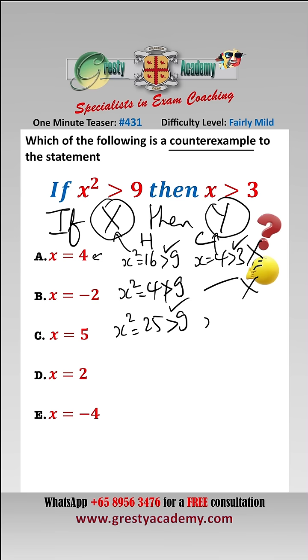x equals 5: well, x squared equals 25, which is greater than 9, so the hypothesis is true. But x equals 5 is greater than 3, so the conclusion is also true. That means it is not a counterexample.